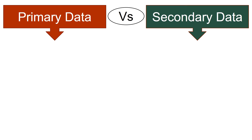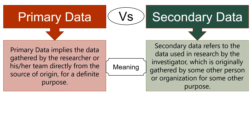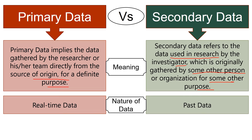Now let's dive into our main topic, that is the difference between primary data and secondary data. In terms of meaning, primary data refers to the data gathered by the researcher or his team members directly from the source of origin for a definite purpose. On the other hand, secondary data refers to the data used in research by the investigator which is originally gathered by some other person or organization for some other purpose. In terms of nature, primary data is real-time data, i.e. it is fresh or updated data, while secondary data is past data collected by some other person for some other reason but used by the researcher in his recent study.